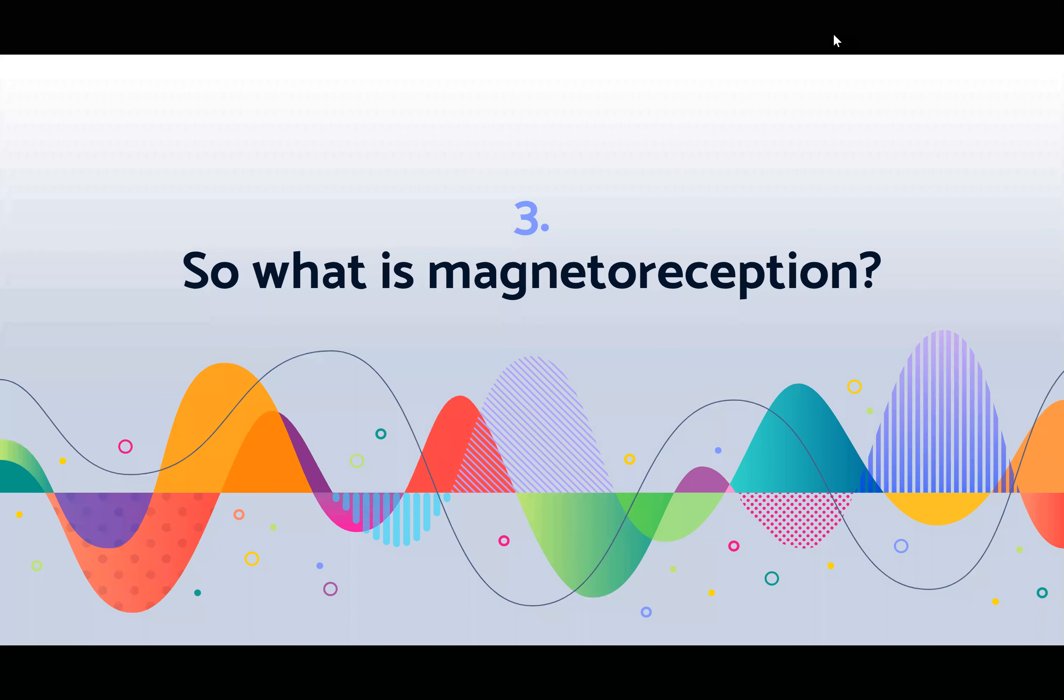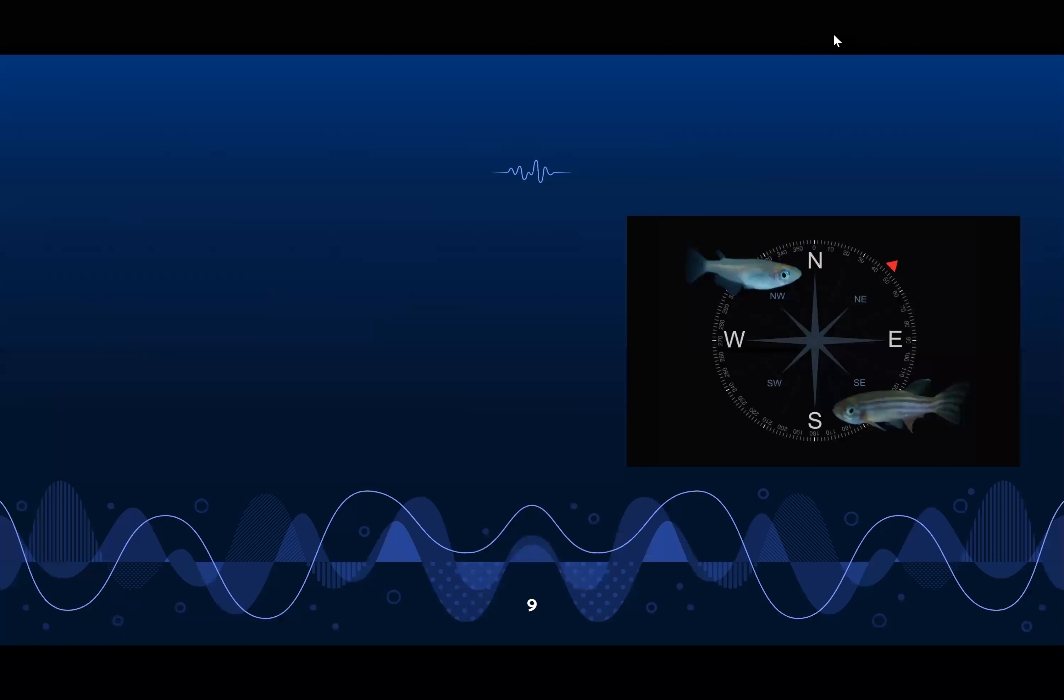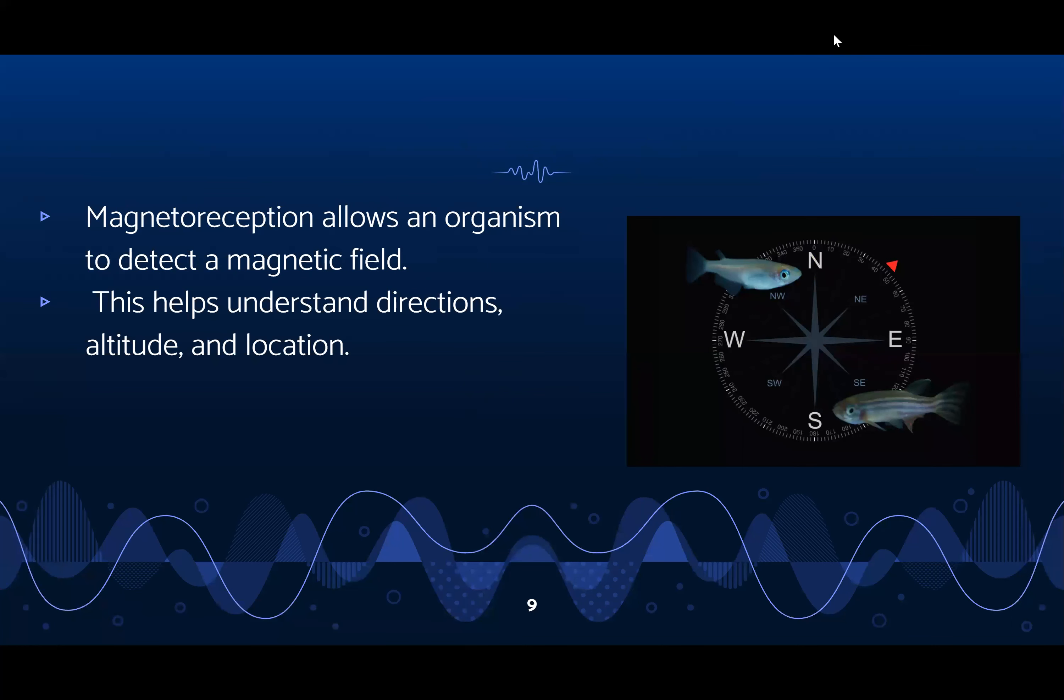So then what is magnetoception? Magnetoception is a sense that allows an organism to detect a magnetic field so that they can understand directions, altitude, and location. In a similar way that humans use compasses to detect earth's magnetic north pole and tell them directions, many animals have natural compasses that work just as well.